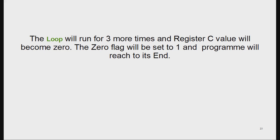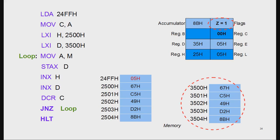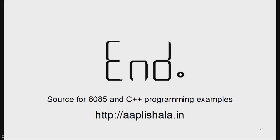This loop continues for three more iterations until counter register C becomes zero. When C becomes zero, the zero flag is set and all five bytes are copied. JNZ checks the zero flag — since it is now set, the program halts. This is the end. I hope you understood the program. If you have any suggestions please comment on this video. Thank you.